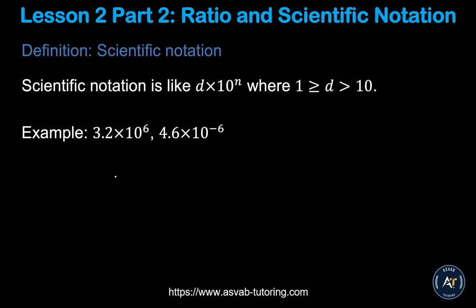The next topic is scientific notation. In science, we often deal with very large or very small numbers, and scientific notation is a shorthand way to write them. You write a number in the form: a number times 10 to some exponent. For example, 3.2 times 10 to the power 6, or 4.6 times 10 to the power negative 6.